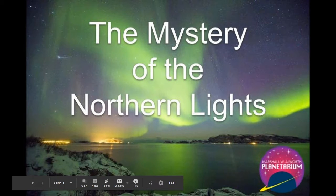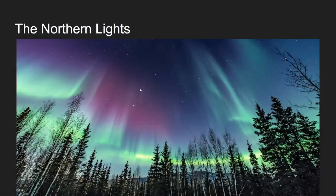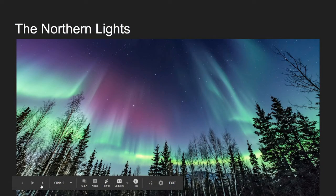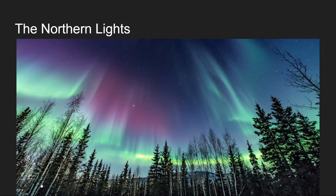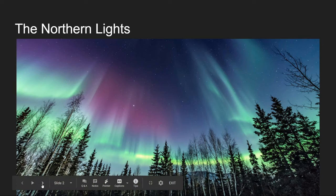We are going to be talking all about the northern lights, or the aurora. The aurora are generally described as this dancing curtain of lights that you can see in the nighttime sky. You can have a variety of colors — greens, reds, purples, blues — and we're going to explain why all of that happens, where all the colors come from.